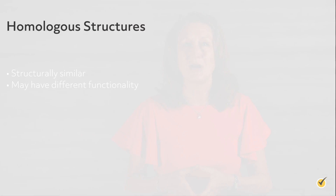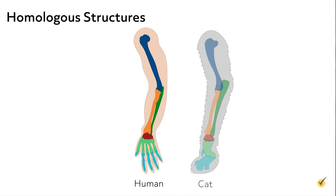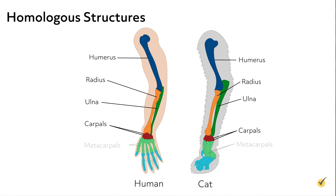Let's compare a couple of tetrapods, specifically a human arm and a cat arm. Both the human arm and the cat arm have a single bone in the upper arm, which we call the humerus, followed by two bones in the forearm — the radius on the more medial side and the ulna on the more lateral side. Both arms also have a common wrist structure, followed by a grouping of metacarpals and phalanges.